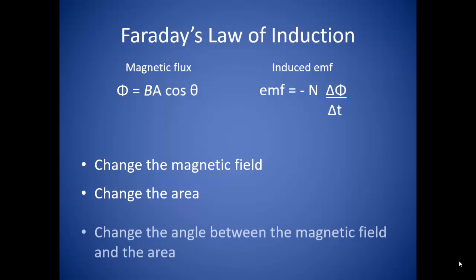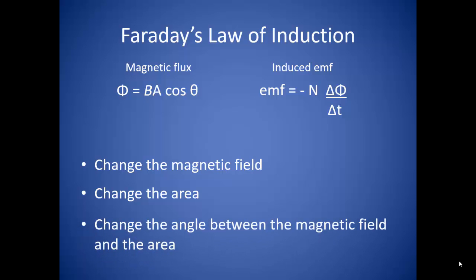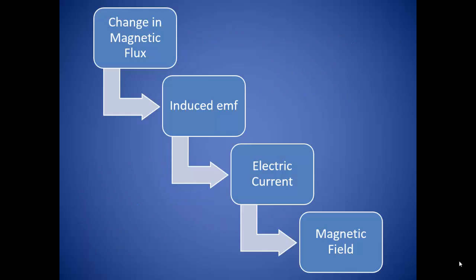The final way to cause a change in magnetic flux is to change the angle between the magnetic field and the area vector. So if any of these three things happen, then an electric current will be induced in a conducting wire. Anytime we have a change in magnetic flux, an electric current will be induced in a conducting wire.